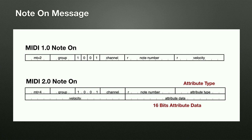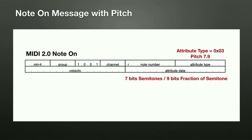In a MIDI 2.0 note on message, the velocity becomes a 16-bit field — nice round numbers, not 7-bit data. Two new fields are added: attribute type and attribute data. The 16 bits of attribute data allows new information about the note on — for example, articulation data. If controlling a string section, this is where you might encode whether the note should be played pizzicato, spiccato, or arco. Pitch data can also go here: attribute type 3 is defined as 'pitch 7.9.'